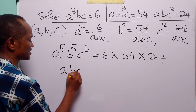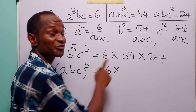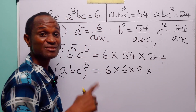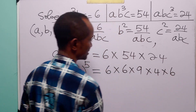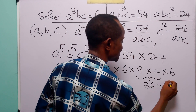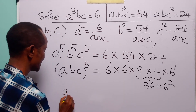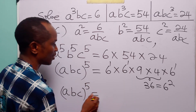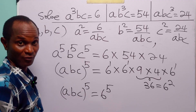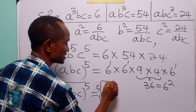This can be written as A times B times C to the power 5, and this is equal to 6 times 54 times 24. Now, 54 is 6 times 9, and 24 is 4 times 6. Notice that 9 times 4 is equal to 36, which is 6 squared. So we have 6 to the powers 1, 2, and 1 — giving us A times B times C to the power 5 is equal to 6 to the power 5.